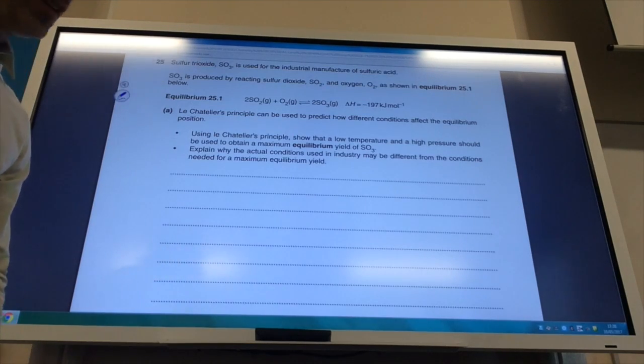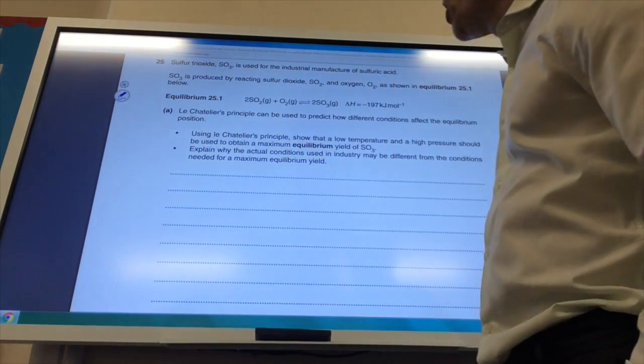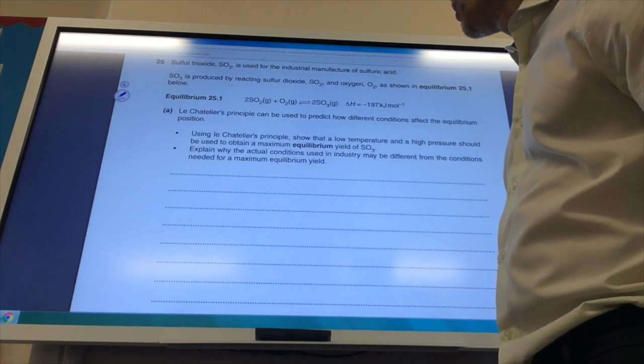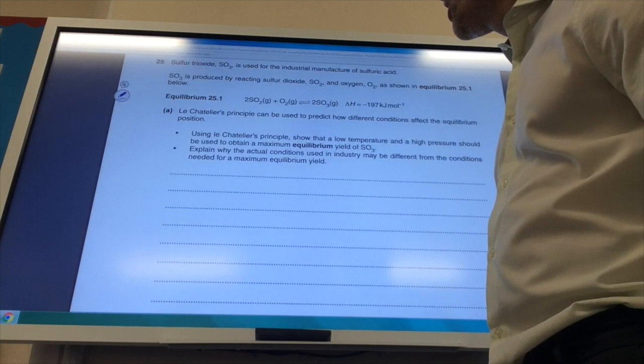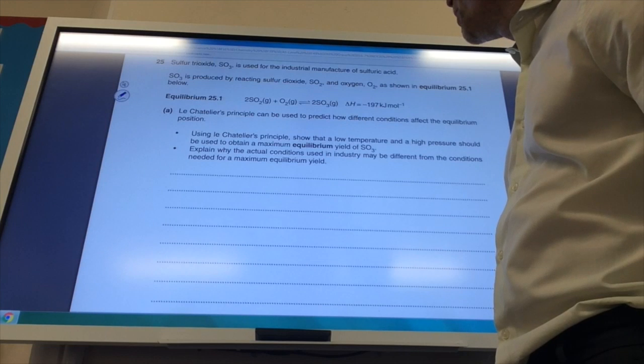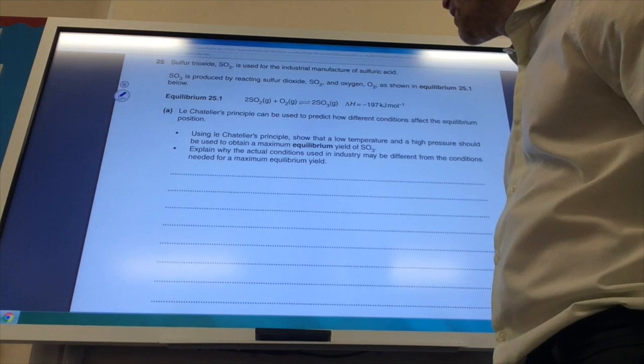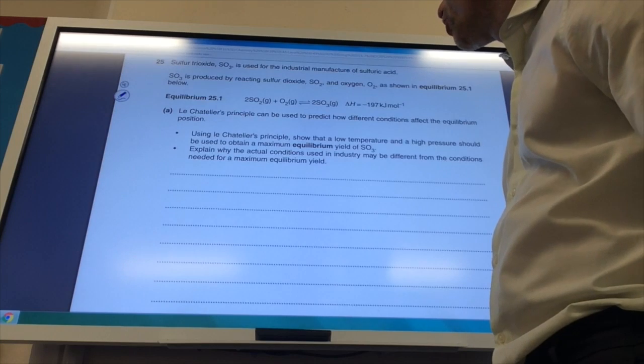Okay, so we've now got a nice question on equilibrium, using sulfur, making sulfur trioxide. So it says, Le Chatelier's principle can be used to predict how different conditions affect equilibrium position. Use Le Chatelier's principle to show that a low temperature and a high pressure should obtain a maximum equilibrium yield of sulfur trioxide.